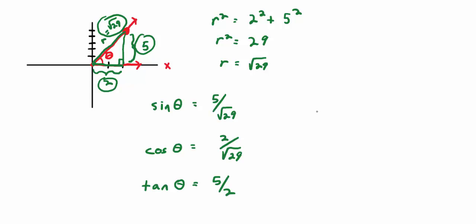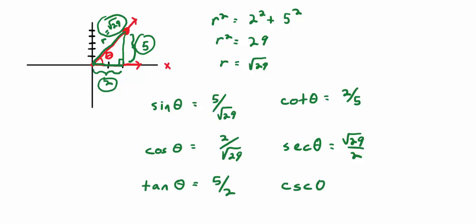Cotangent is the reciprocal of tangent, so it's 2/5. Secant is the reciprocal of cosine: √29/2. And cosecant is the reciprocal of sine: √29/5. Nothing but review so far, except for creating this angle through the point — that was a little bit new. Everything else is just what we talked about last time.